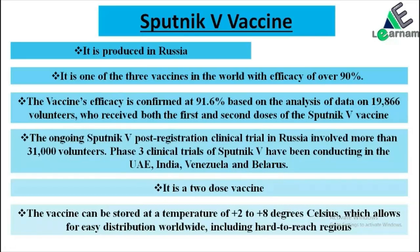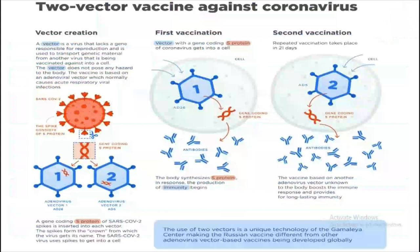It is a two-dose vaccine. The vaccine can be stored at a temperature of plus 2 to plus 8 degrees Celsius, which allows for easy distribution worldwide, including hard-to-reach regions. Now let's see how it has been created and what its mechanism of action is.